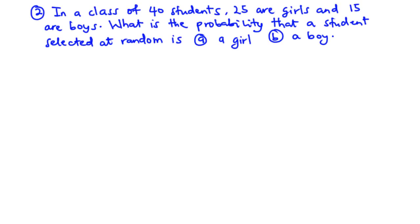So for the second example, in a class of 40 students, 25 are girls and 15 are boys. What is the probability that a student selected at random is A, a girl, and then B, a boy?